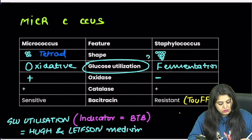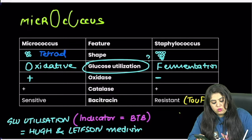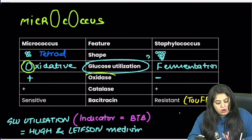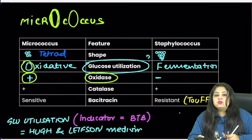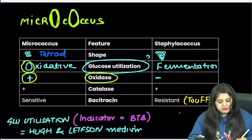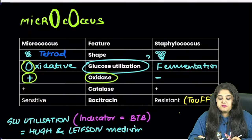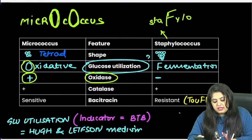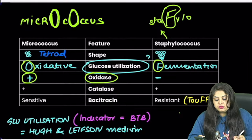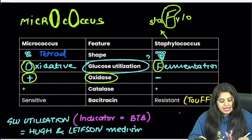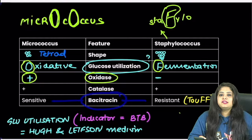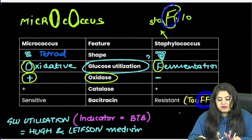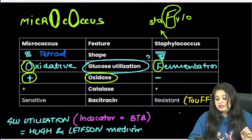To remember: Micrococcus — everything in the name has 'o' sounds, so oxidative glucose utilization and oxidase positive. Staphylococcus is everything 'F' — fermentative glucose utilization. And Staphylococcus is very tough, meaning it is bacitracin resistant.